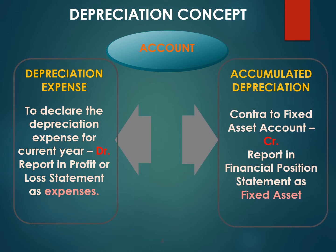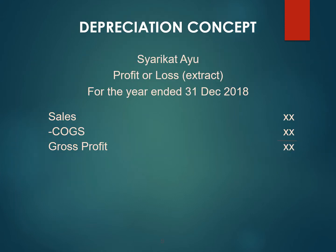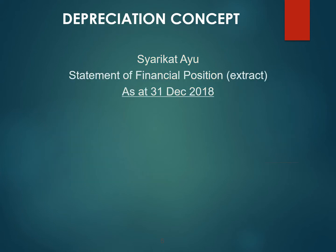Whereas the accumulated depreciation is a contra to the fixed asset account. We credit the accumulated depreciation and report it in the financial position statement as a fixed asset. We report the depreciation expense in the profit or loss statement, and this is an example of how we report the accumulated depreciation in the financial position statement.